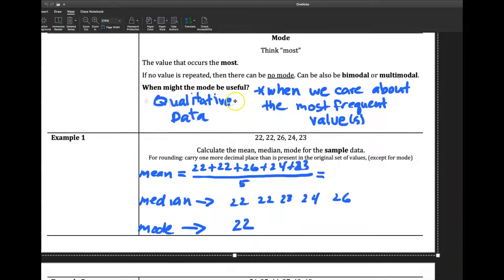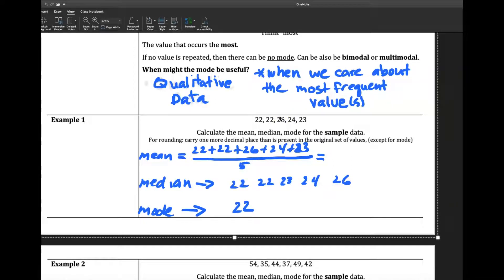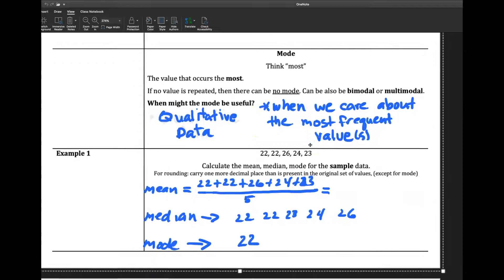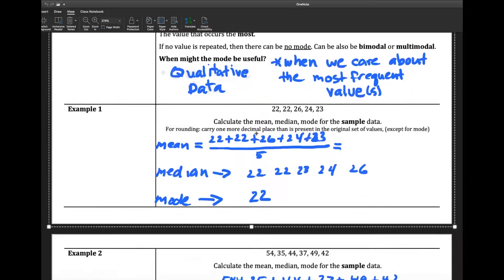The mode is used for qualitative data. We just want to know which value comes up the most. That's the mode. When we care about which are the most frequent values, sometimes data has no mode. Sometimes it's bimodal, meaning there's more than one, or multimodal, it could be two or three.